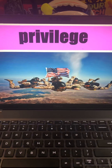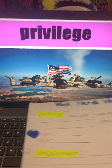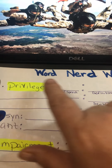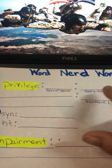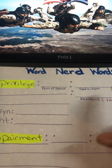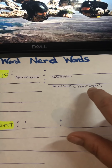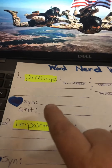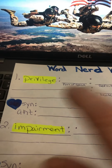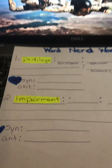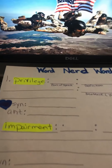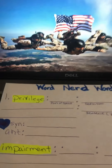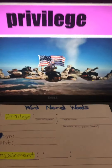Our first word is privilege. You'll see that we have written privilege here. You need to put the part of speech, a definition, a sentence — your own, not the one from the dictionary or on your phone — then write a synonym and an antonym. That's your first word, privilege. Notice I highlighted it; you can do that if you have a highlighter at home.